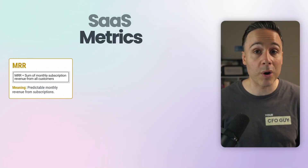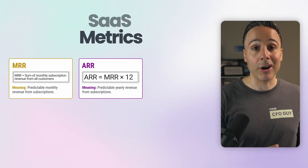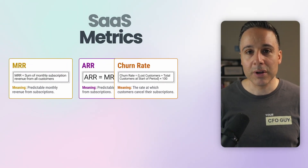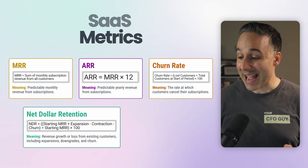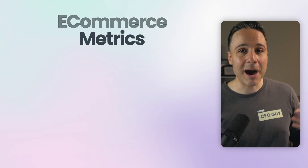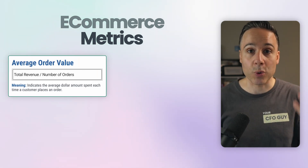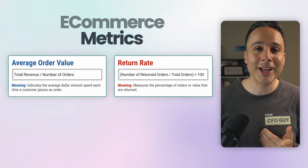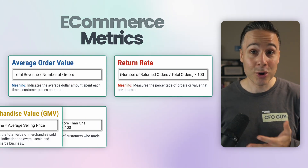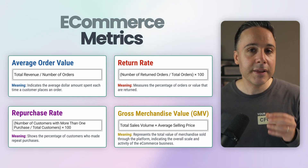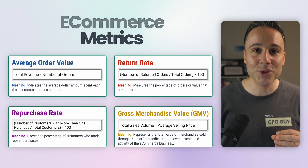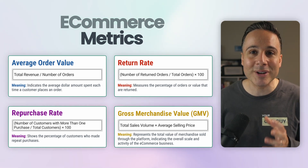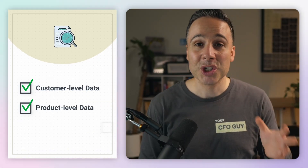If you work in SaaS, you've probably heard of MRR (monthly recurring revenue) or ARR (annual recurring revenue). Then there's churn, net dollar retention, CAC payback. And if you're an e-commerce company, it might be average order value, return rate, repurchase rate, or gross merchandise value. These metrics can be incredibly useful, but they require much more detailed data: customer-level data, product-level data, subscription cohorts — the list goes on.